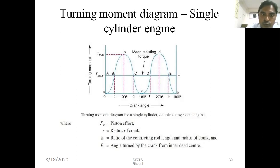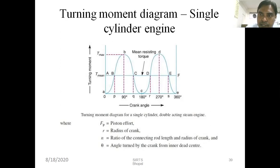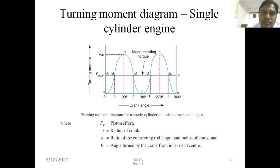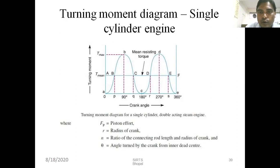When the crank rotates from Q to R, this curve indicates that the energy requirement is more but the engine is providing less energy, generating less energy. In this case, we take energy from the flywheel — the flywheel provides the energy to the engine. This is the negative loop, where work is done on the engine. Then as the crank rotates from R to S, there is again an excess of energy which is stored back into the flywheel.